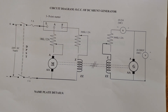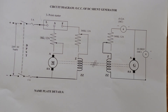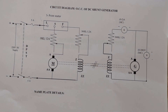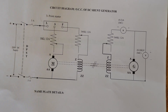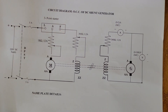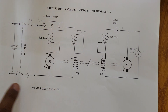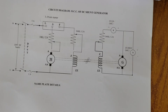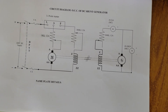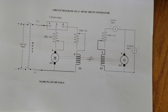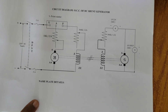Good morning to one and all. Today we are going to explain our next experiment: open circuit characteristics of a DC shunt generator. Initially, while coming to the machine's lab, we have to note down the nameplate details first.